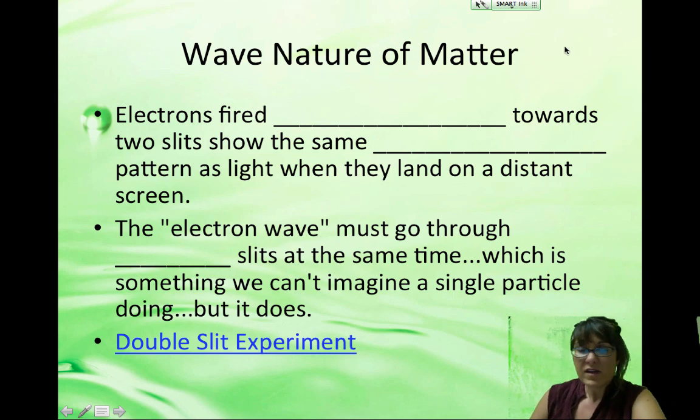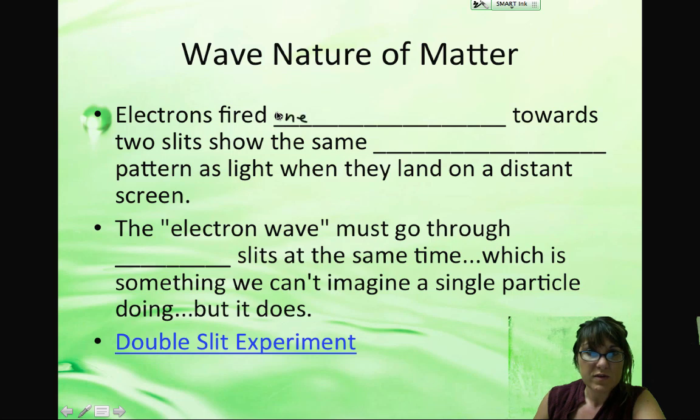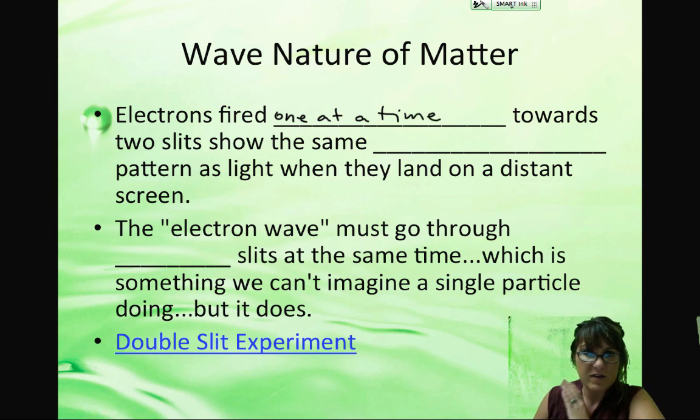So the wave nature of matter was proposed by de Broglie. And then it was finally proven experimentally. When electrons are fired one at a time towards two slits, like the double slit experiment, then we would expect the electrons to just pass through one slit or the other. But actually, they show the same interference pattern as light does.